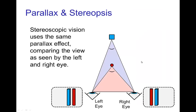Parallax also works if, instead of moving a single camera, we have two cameras looking at a scene — or even simpler, if we think about our stereoscopic vision in which a left eye and a right eye send images to the brain. In this case, the red object appears closer to us than the blue object because of its different position in the field of view from the left eye to the right eye. This is parallax used to establish a sense of depth.